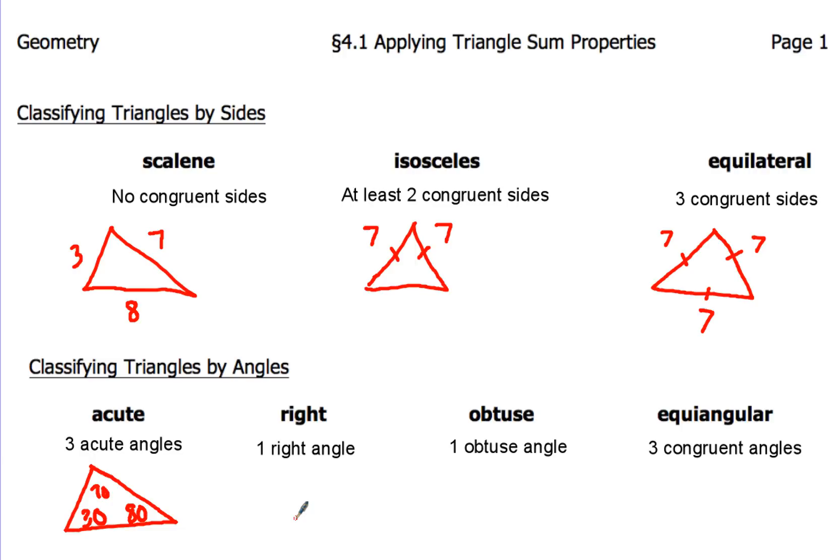Now for the right triangle, right triangle is just going to have one right angle. Sometimes it might be drawn like this. Other times it might be drawn some other way. Well, at the end of the day, there's going to be one right angle in there.